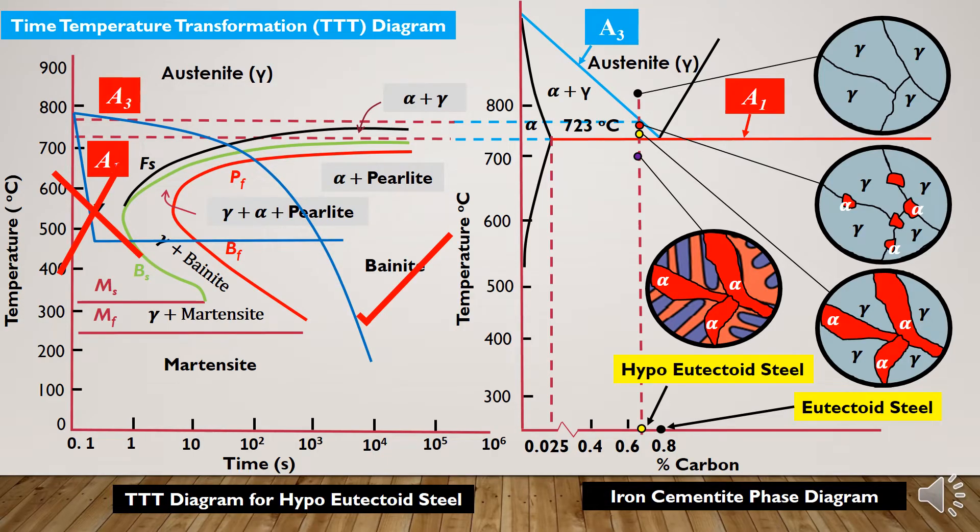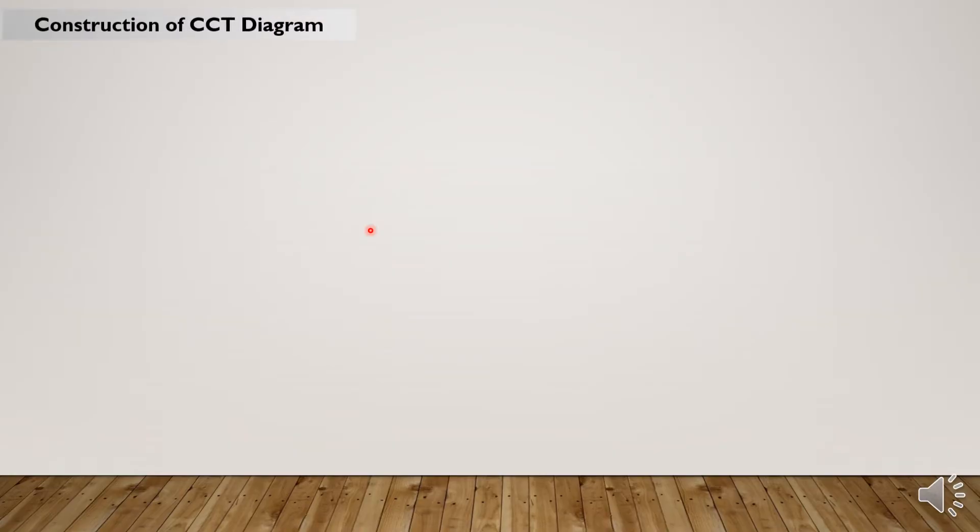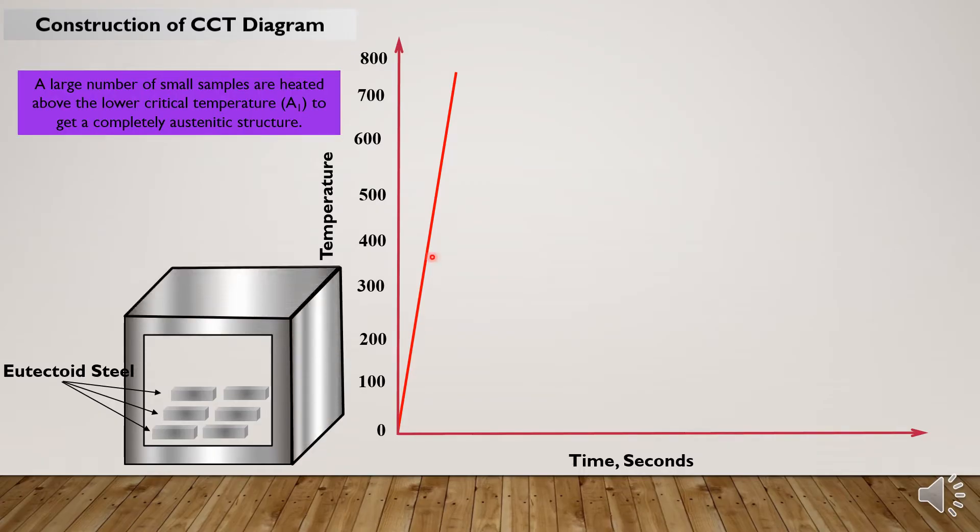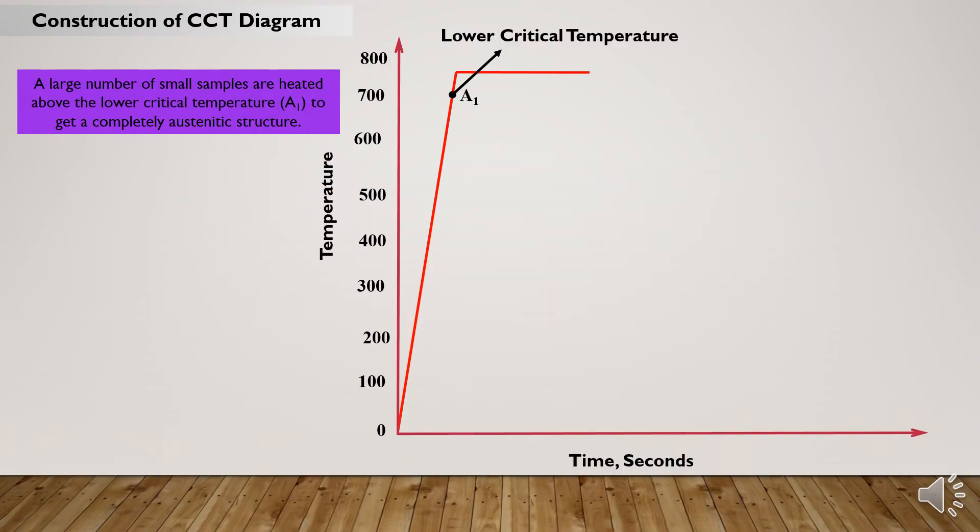For the construction of a CCT diagram for a eutectoid steel, we will take a large number of small steel samples of the same composition and heat them up above the lower critical temperature and maintain at this temperature for a sufficiently long period of time so as to obtain a homogeneous austenitic structure.